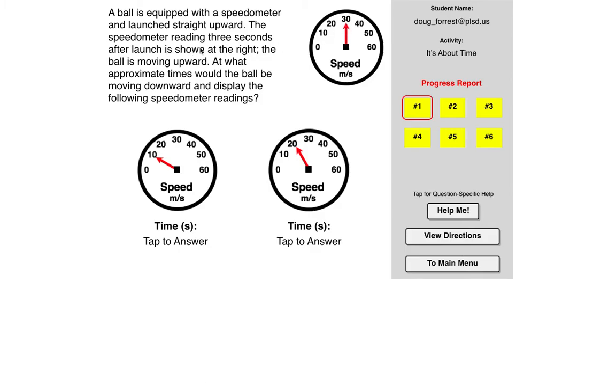So that means it had to be launched at faster than 30 meters per second up. In fact, if it's after three seconds after launch, it would have been launched at 60 meters per second up. Because every second the ball or the object is in the air, it's moving upward, it slows down by 10 meters per second. Every second that's coming back down, it speeds up by 10 meters per second. So what approximate times would the ball be moving downward and display the following readings?